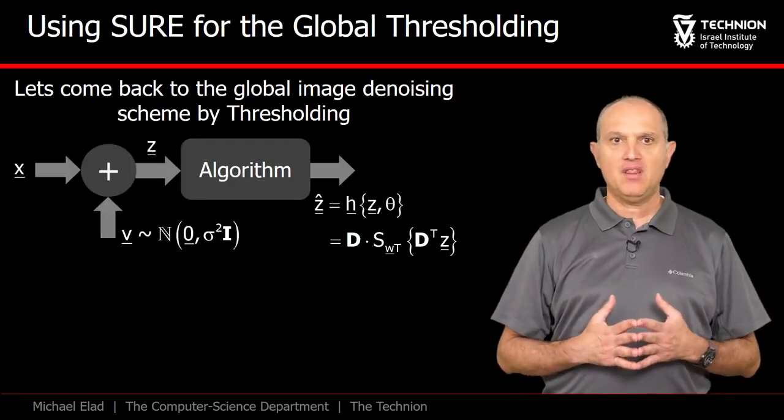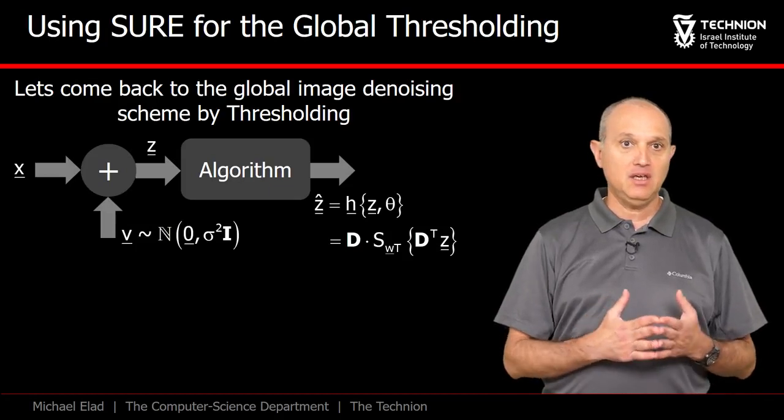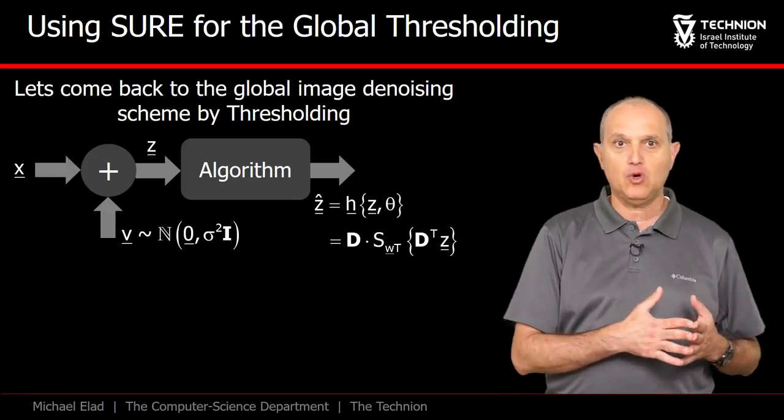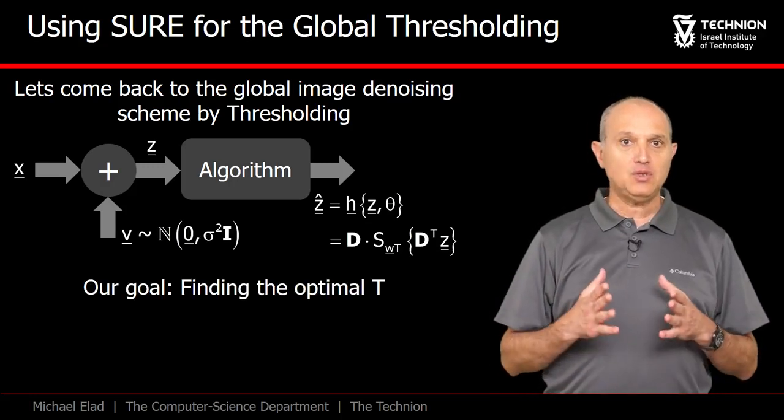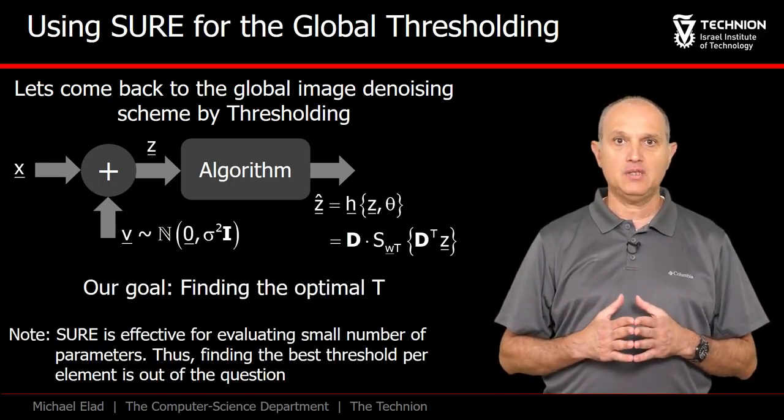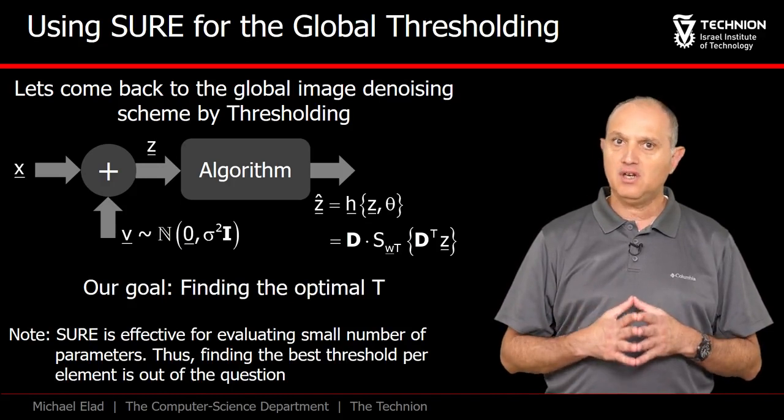We come back to our algorithm, and therefore the denoiser is given by D times the thresholding operator operating on D transpose times z. We aim to set the scalar T automatically, and as we are about to see, this is definitely doable.